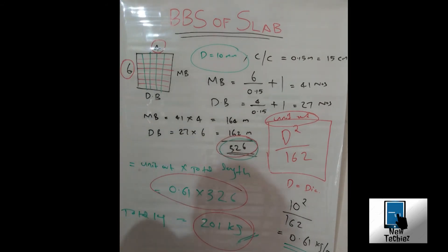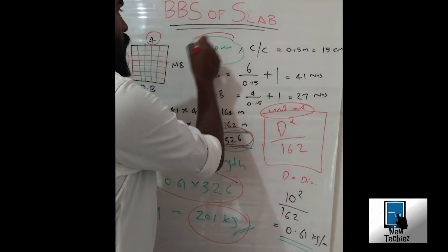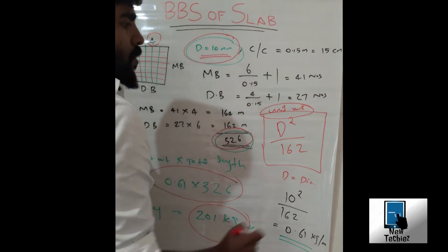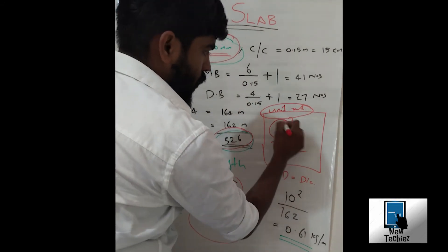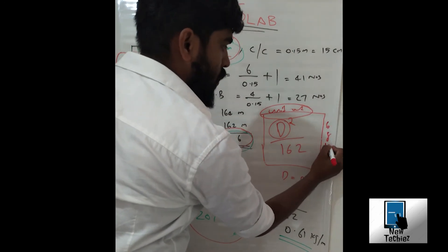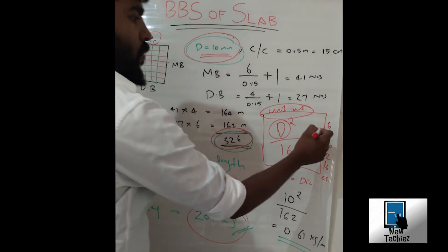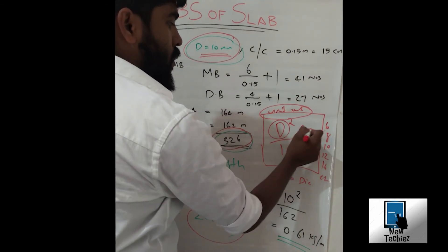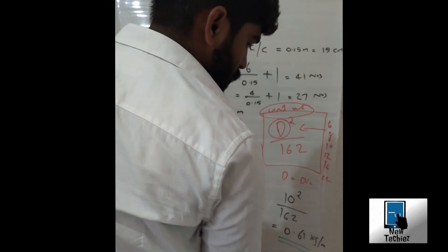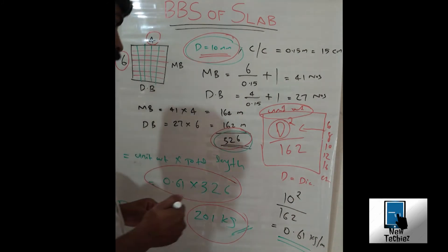One thing you have to note, it may change upon the diameter of the bar. Here we applied a 10 mm, but it will change upon the value, it may be 6, 8, 10, 12, 16, etc. Apply the value of diameter here and square by 162, we get the value of unit weight. Multiply this unit weight into total length to get total amount of the bar required.